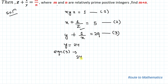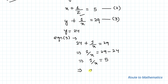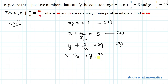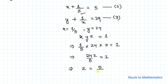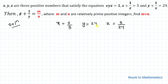Substituting y = 24 into equation 3: 24 + 1/x = 29, which gives 1/x = 5, so x = 1/5. Now putting x = 1/5 and y = 24 into equation 1: (1/5)(24)(z) = 1, so 24z/5 = 1, giving z = 5/24. We now have x = 1/5, y = 24, and z = 5/24.